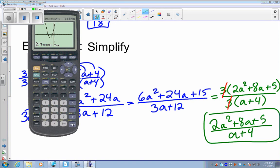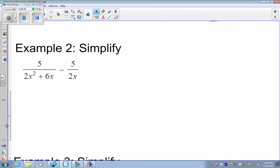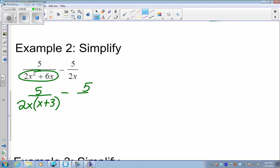Moving on. Simplify it again. In this case, sometimes it might be beneficial if you factor right away. So I look at the problem. And I can see that the denominator, first denominator, I can factor out the greatest common factor of 2x. So I'm going to rewrite the problem and factor out the 2x. That's x plus 3 left over minus the second fraction, 5 divided by 2x.